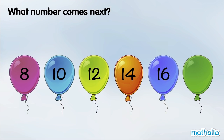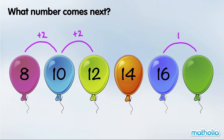What number comes next? 8, add 2, is 10. 10, add 2, is 12. The numbers are going up by 2 in each step. 16, add 2, is 18. The next number is 18.